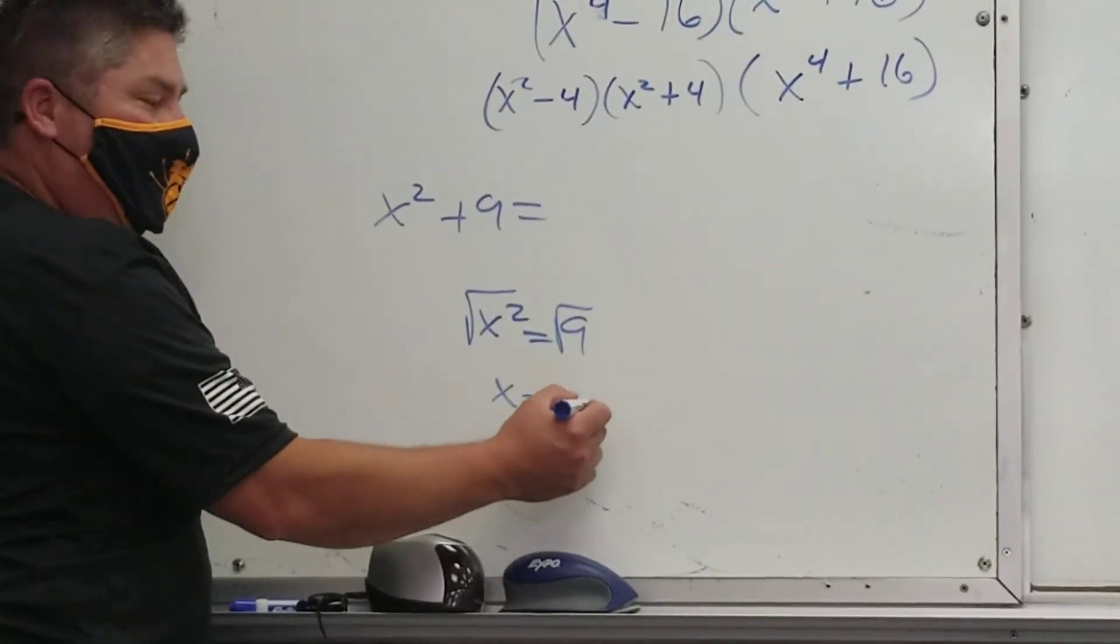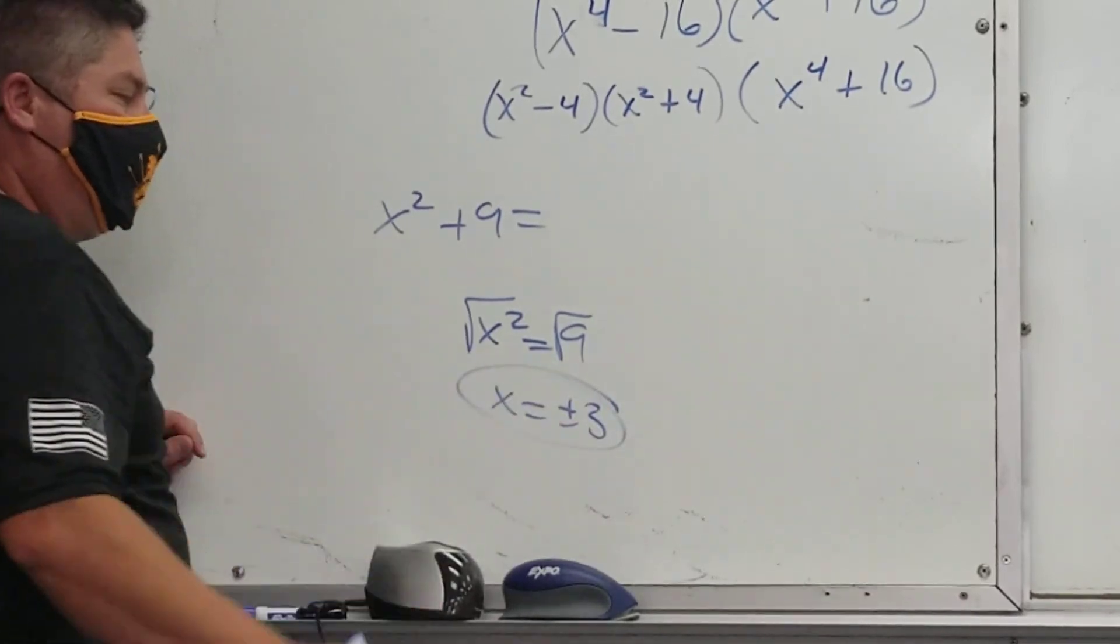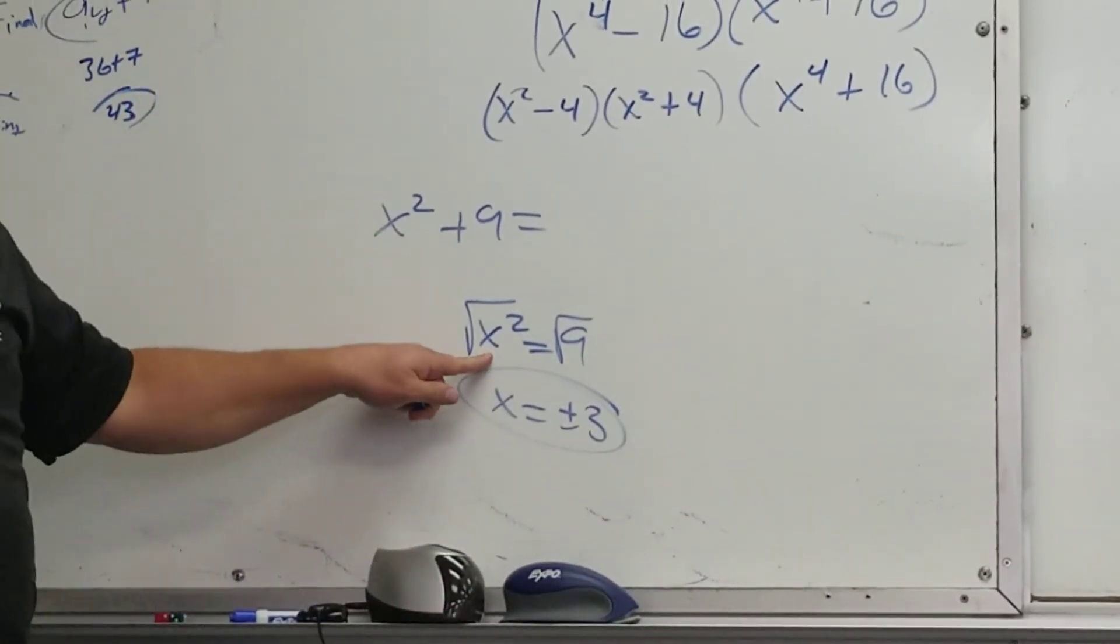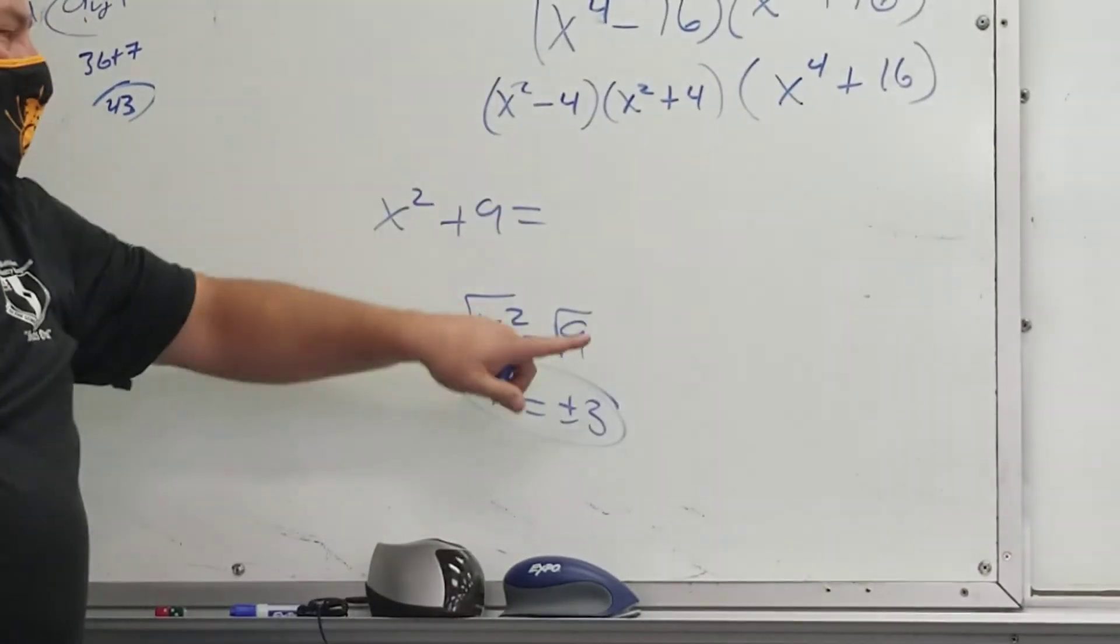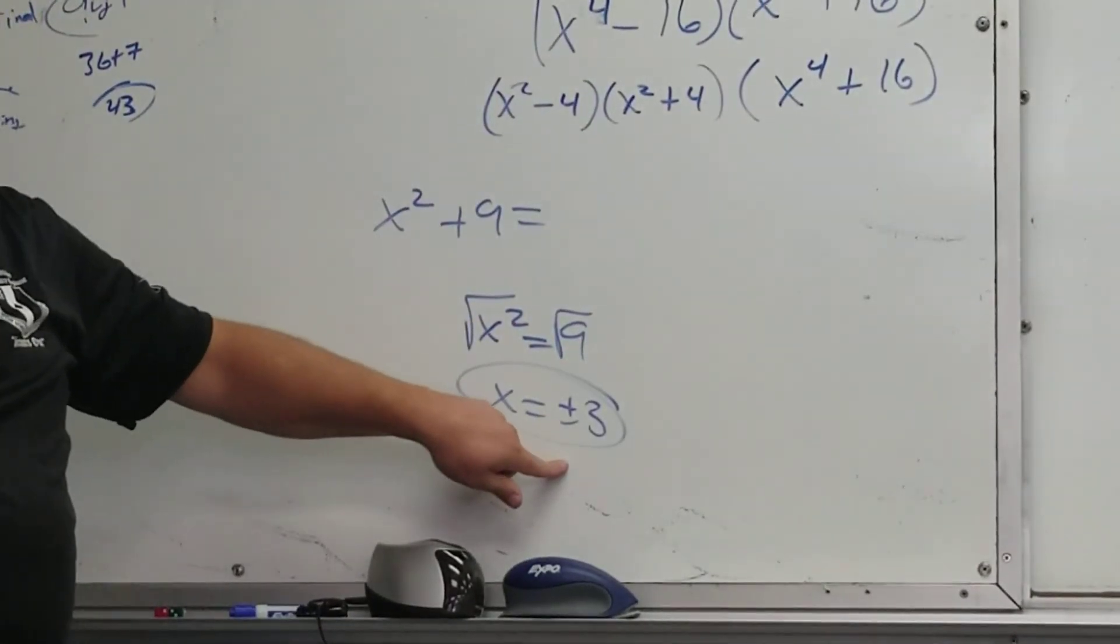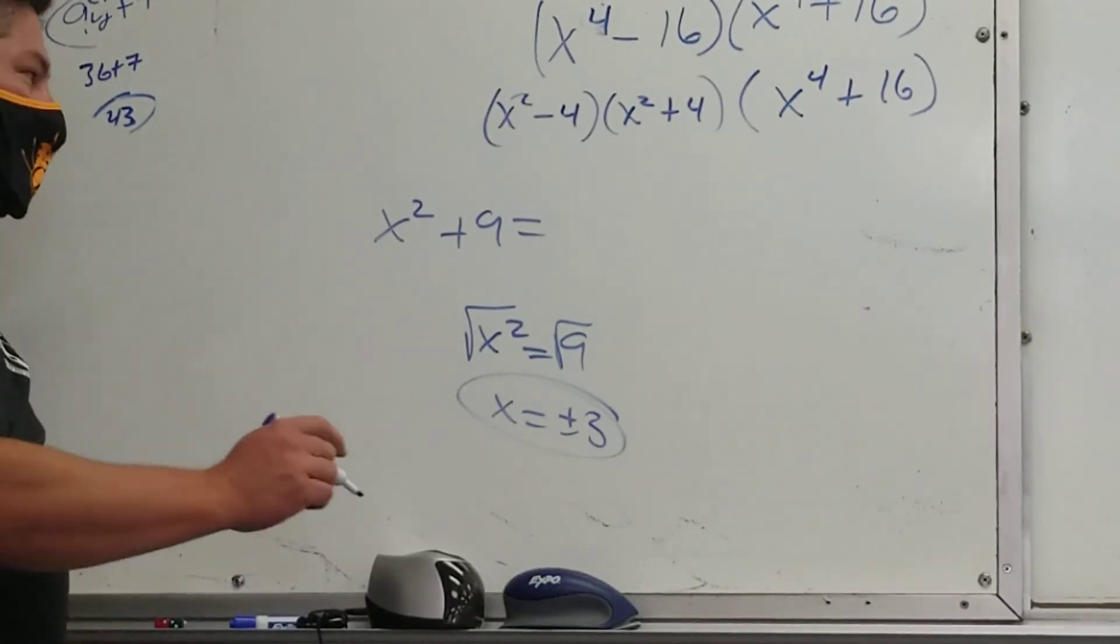Because what's 3 squared? 9. What's negative 3 times negative 3? 9. That's why it's plus or what? Minus. Everybody agree with that? Solve this. x squared minus 9 equals 0. Minus 9. Now what?